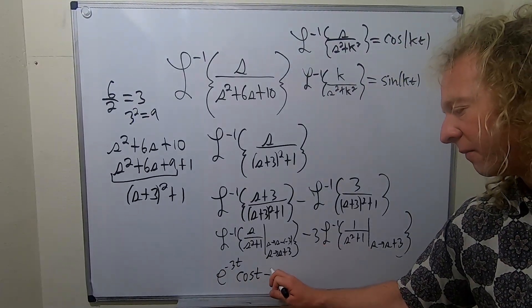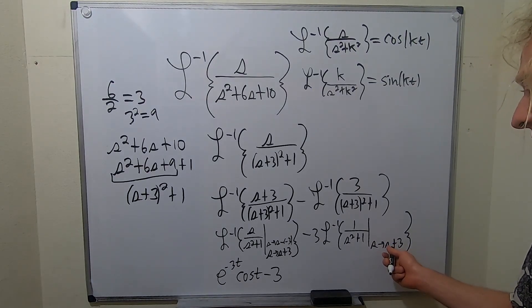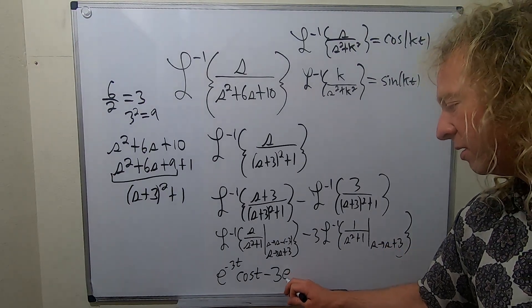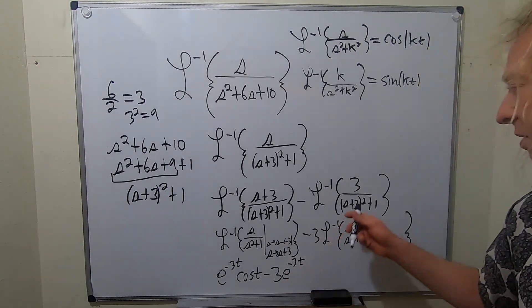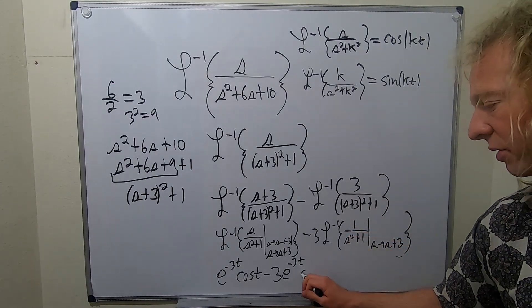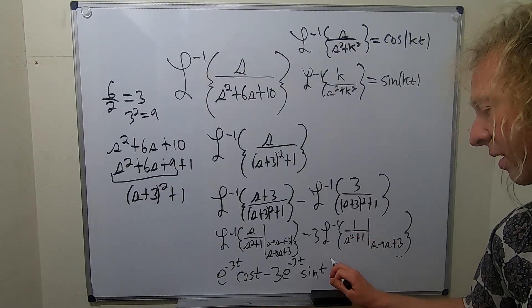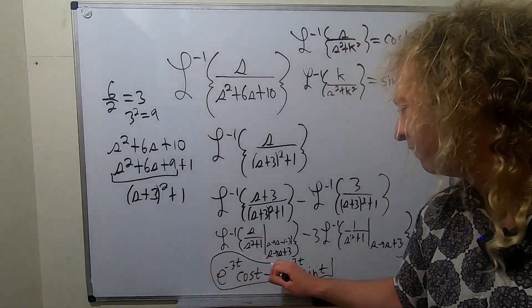And then minus 3. And this shift, same thing. It's also going to give us an e to the negative 3t. But this has the k. So it's sine. So this is sine of t. And that would be the final answer.